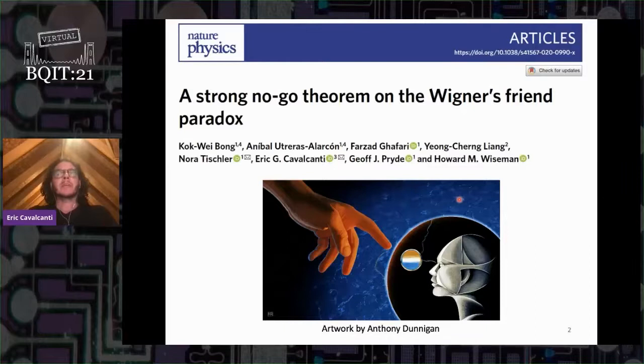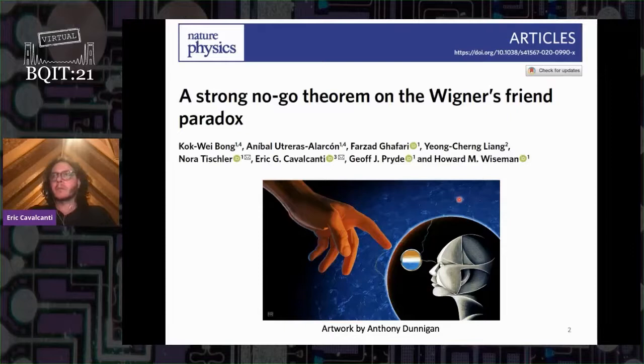One of the key messages I want to convey is that this result has foundational implications beyond Bell's theorem. Whereas Bell's theorem forced us to deal with the puzzle of entanglement, our no-go theorem forces us to deal with what I would say is the most important puzzle in quantum foundations, which is the measurement problem, paradigmatically illustrated by Wigner's Friend paradox.